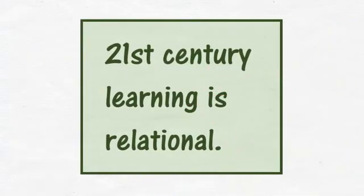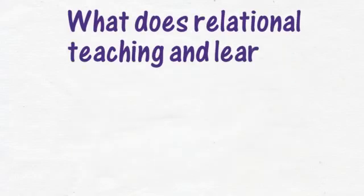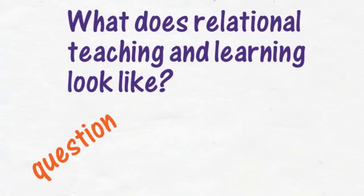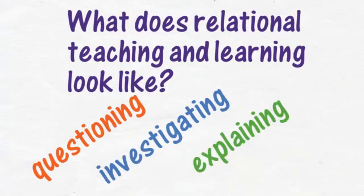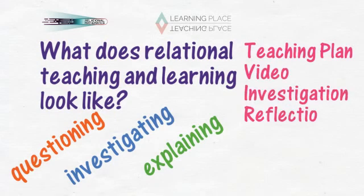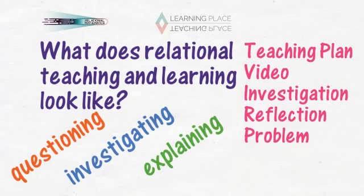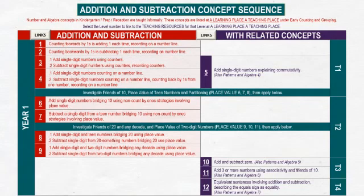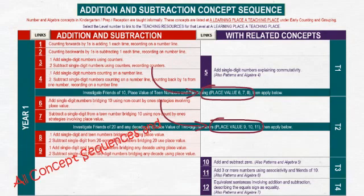21st century learning is relational. What exactly does relational teaching and learning look like? It looks like questioning, investigating and explaining. All teaching resources — every teaching plan, video, investigation, reflection and problem — at a learning place or a teaching place involve questioning, investigating and explaining to allow children and teachers to develop relational understanding of concepts. The concept pages provide information and guidance on related concepts to ensure that children are explicitly investigating and explaining the relationships between concepts.